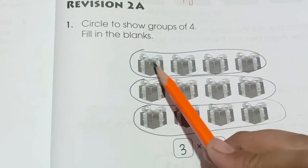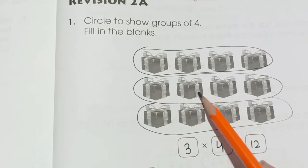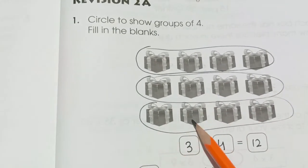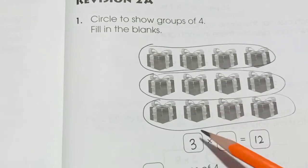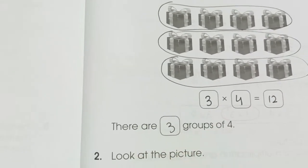So here we have 1, 2, 3, 4, 1, 2, 3, 4, 1, 2, 3, 4. So we have made 3 groups of 4. 3 fours are 12. There are 3 groups of 4.